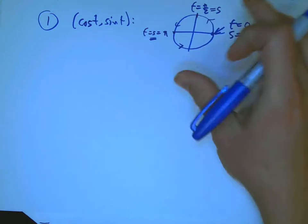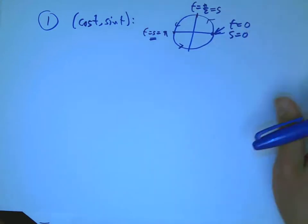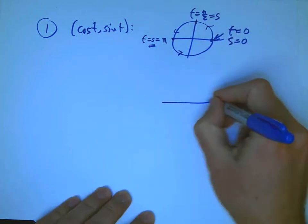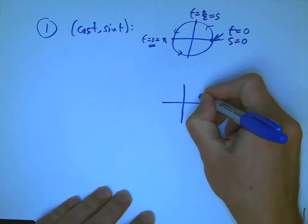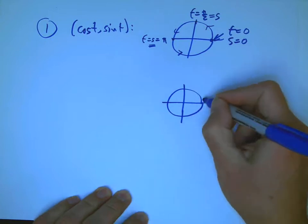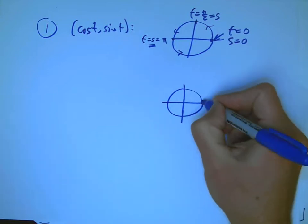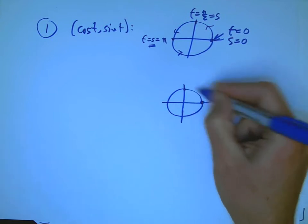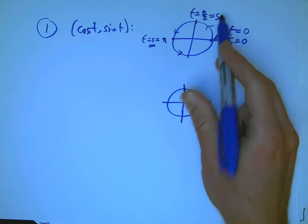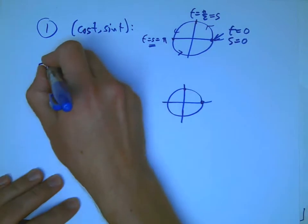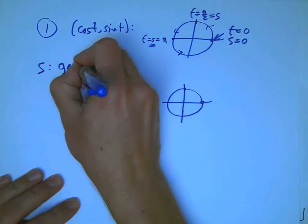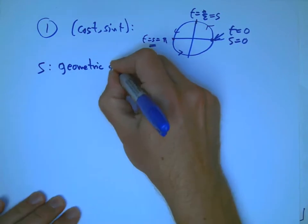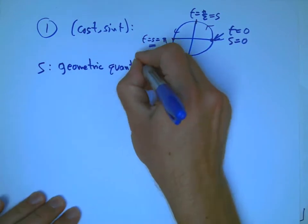Well, that's wonderful because this parameter s has a meaning you can look at and, in principle, calculate without knowing anything about the parametrization. I can just draw a circle here, and I don't have to tell you how I'm parametrizing it. You can calculate, whatever method, that this length here is definitely a quarter of a circle of radius one, that's definitely pi over two. And so s is a geometric quantity.